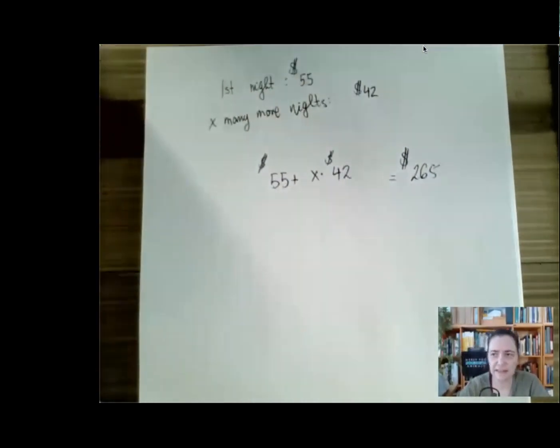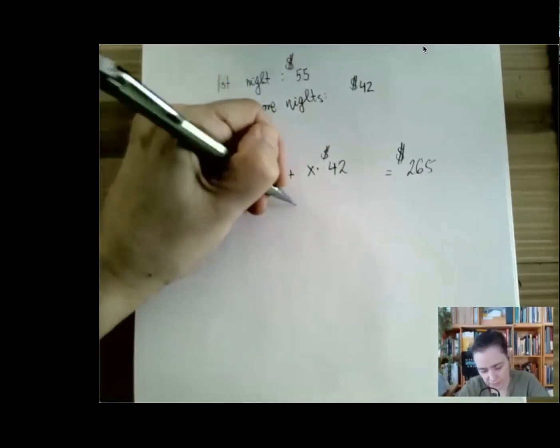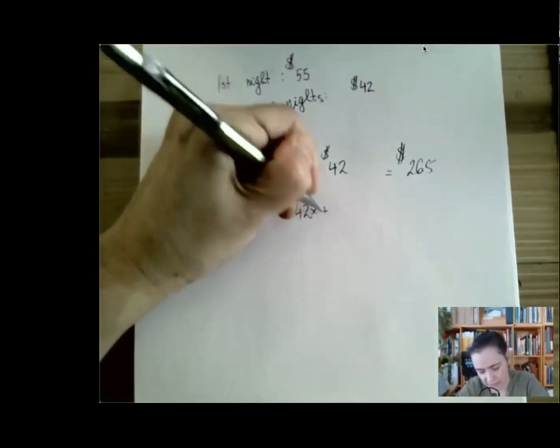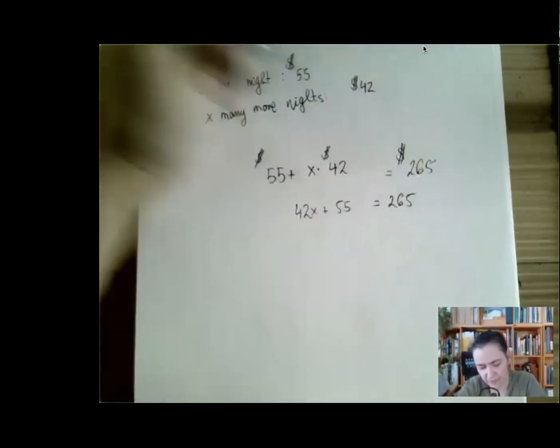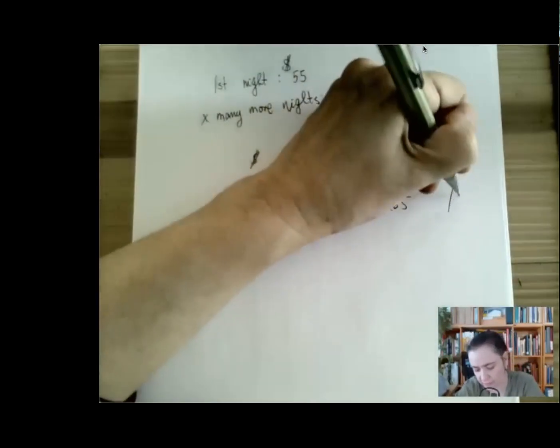And then what we have, after we drop the units, is just a two-step equation, something like 42X plus 55 equals $265. So we're going to subtract 55 and divide by 42.